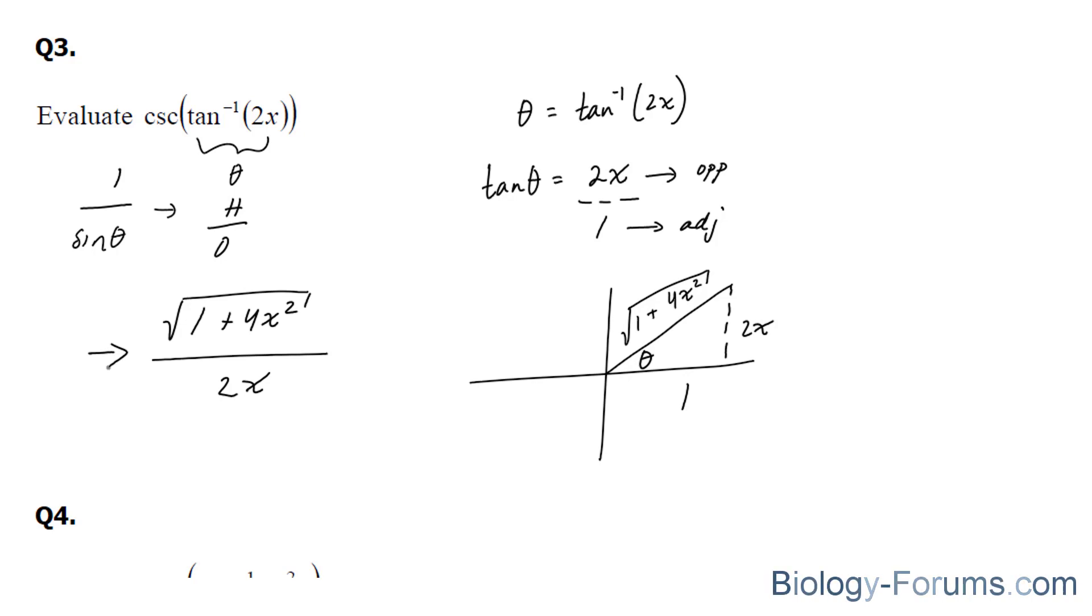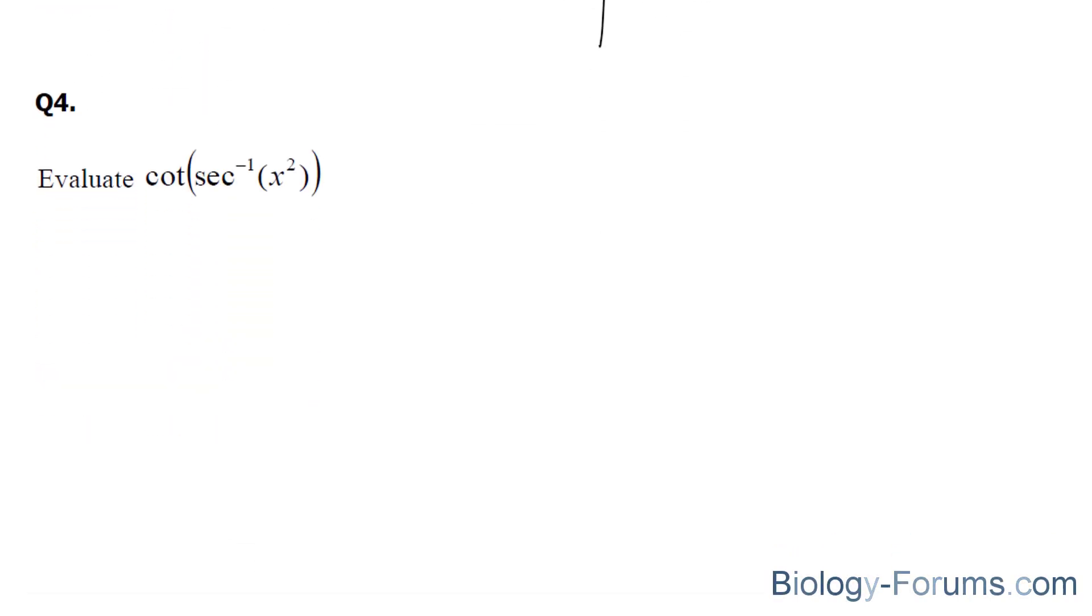Let's move on to the last question. In this question, we are asked to find the cotangent of the inverse of cosecant x squared, leaving the best for last. I'm going to set this to theta. Theta is equal to sec, and I will take the secant of both sides, which gives me x squared.